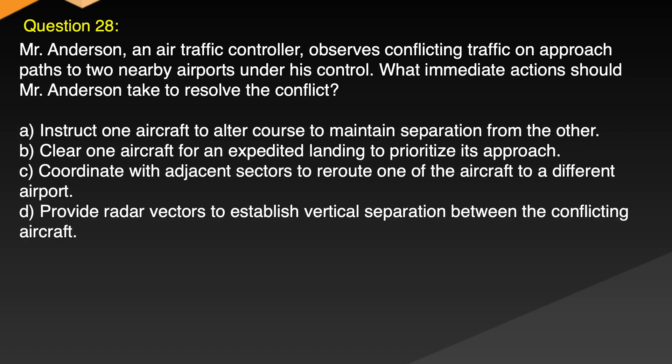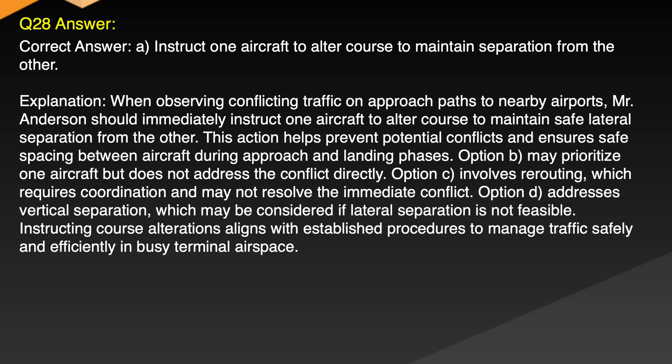Question 28. Mr. Anderson, an air traffic controller, observes conflicting traffic on approach paths to two nearby airports under his control. What immediate actions should Mr. Anderson take to resolve the conflict? A. Instruct one aircraft to alter course to maintain separation from the other. B. Clear one aircraft for an expedited landing to prioritize its approach. C. Coordinate with adjacent sectors to route one of the aircraft to a different airport. D. Provide radar vectors to establish vertical separation between the conflicting aircraft. Correct answer: A. Instruct one aircraft to alter course to maintain separation from the other.